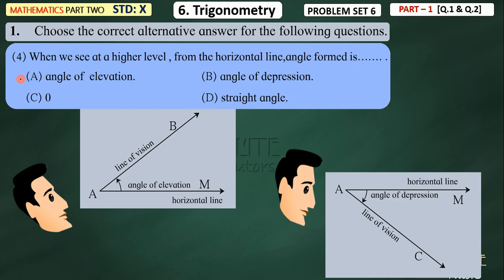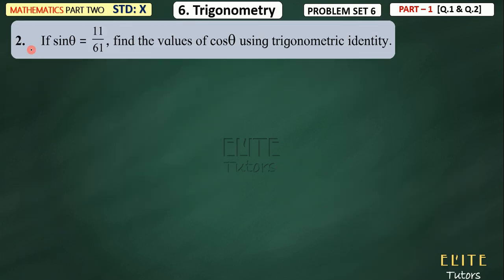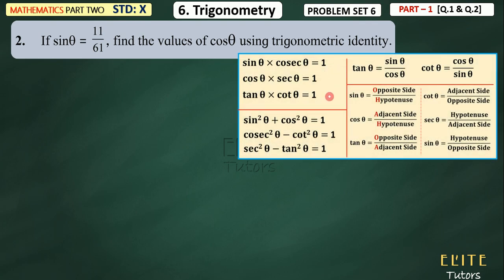The answer is angle of elevation. Then question number 2 is the last question: if sin theta is 11 upon 61, find the value of cos theta using trigonometric identity. I have told you in practice that we can solve using two methods — triangle method or identity method — which means you will have to use the identity formula.